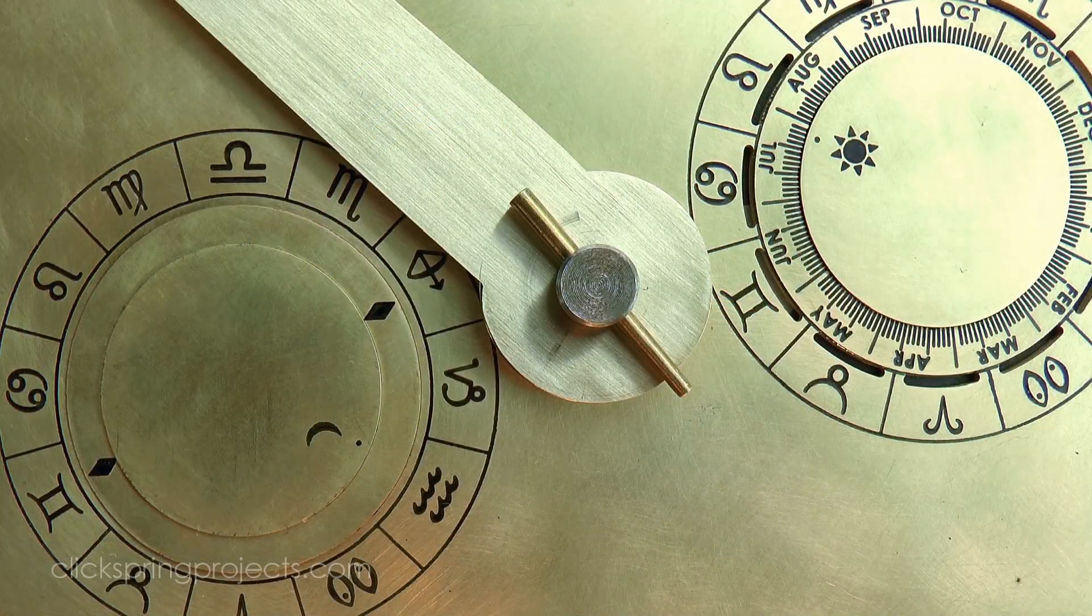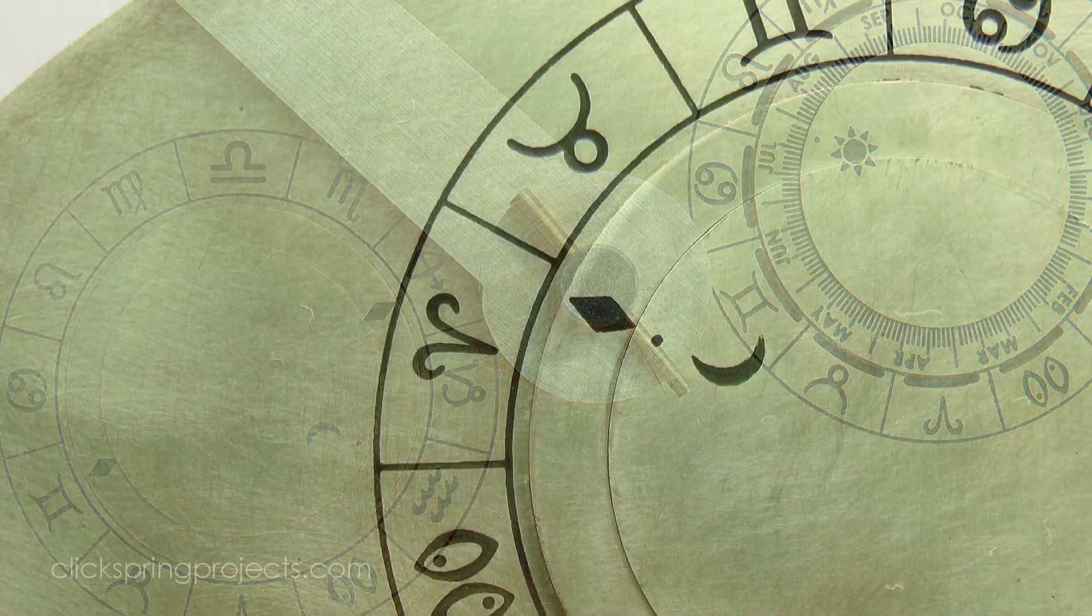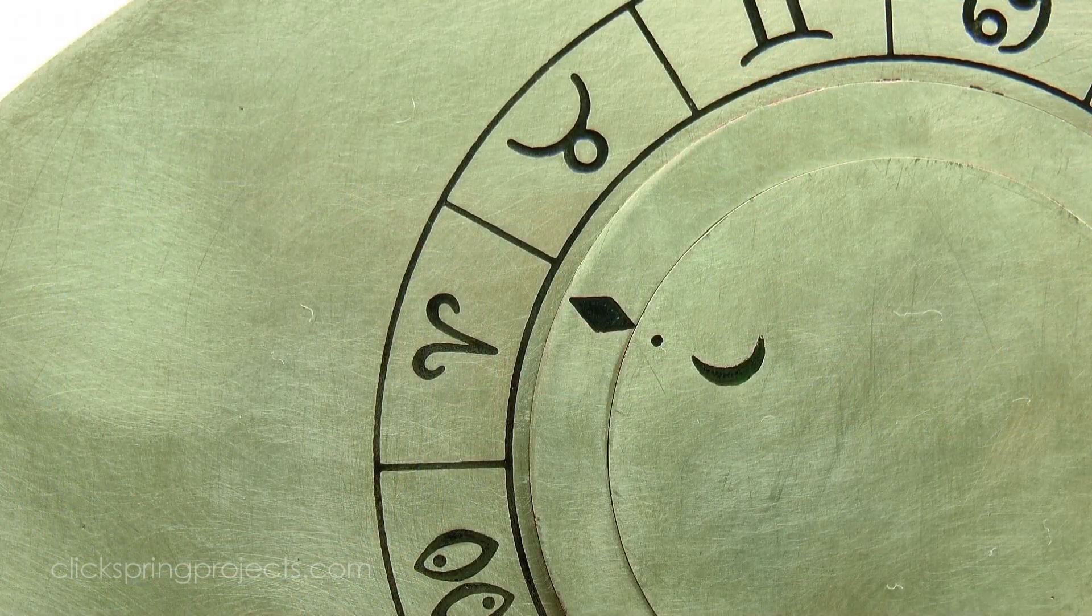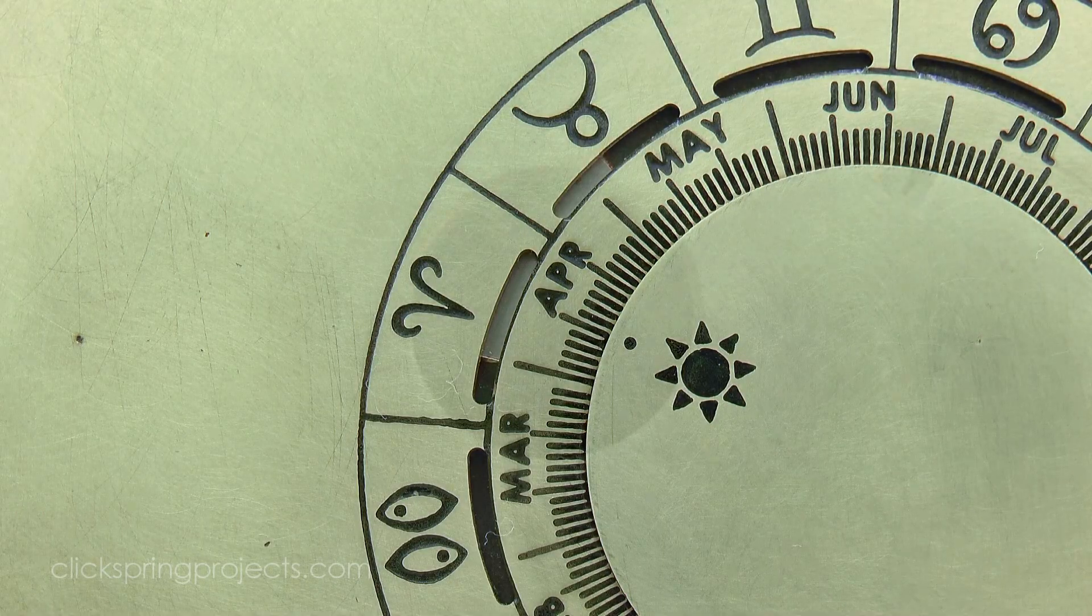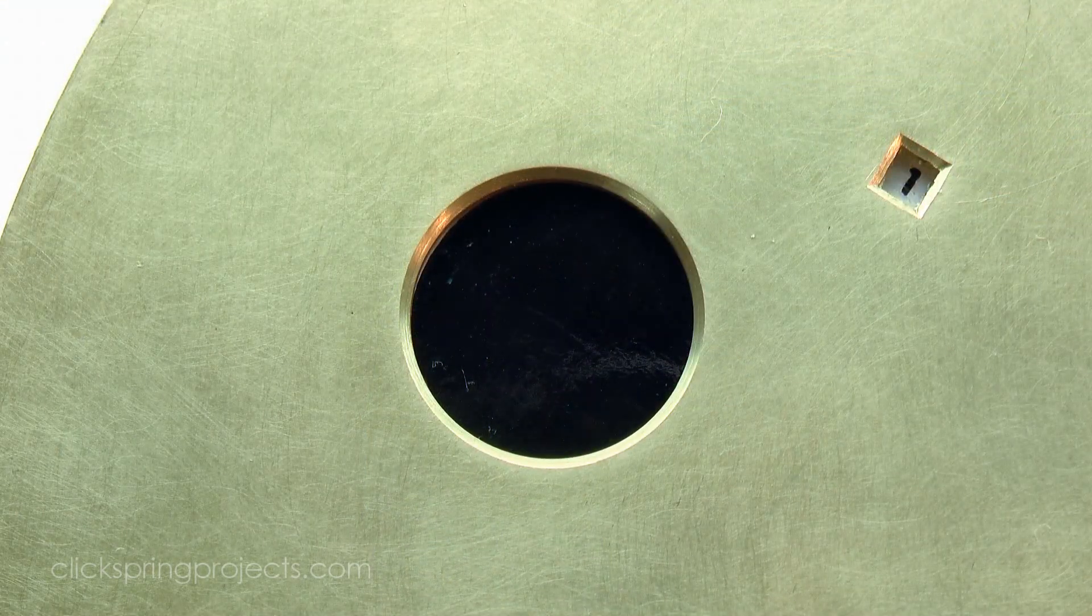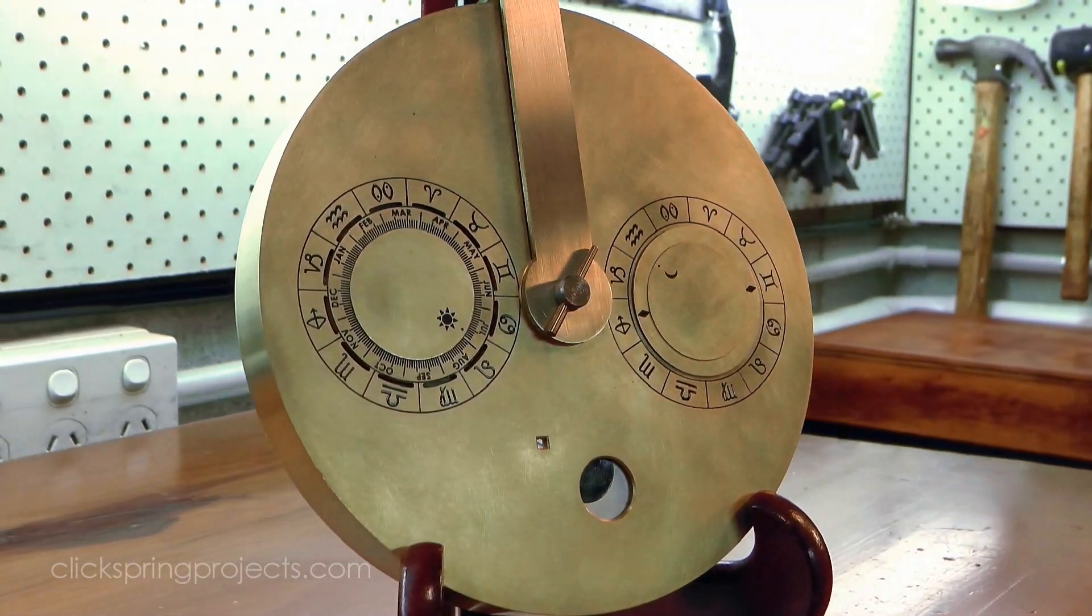I've extended the original design to include a lunar node display, according to the research of the engineering historian Michael Wright. This transforms the device from a simple calendar into a very effective eclipse prediction machine. It also makes it a great tool to help visualize the celestial mechanics behind an eclipse.